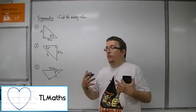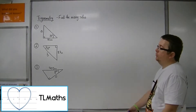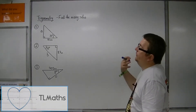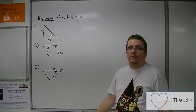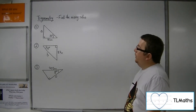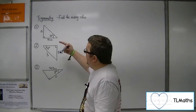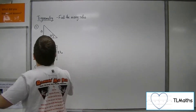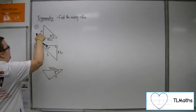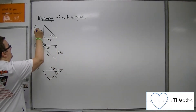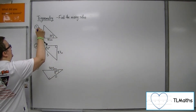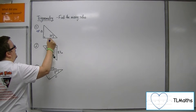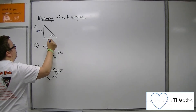We have three right-angled triangles here and three sides to find. With this first triangle, we have an angle, and we want to find its opposite side, and we have been given the adjacent.